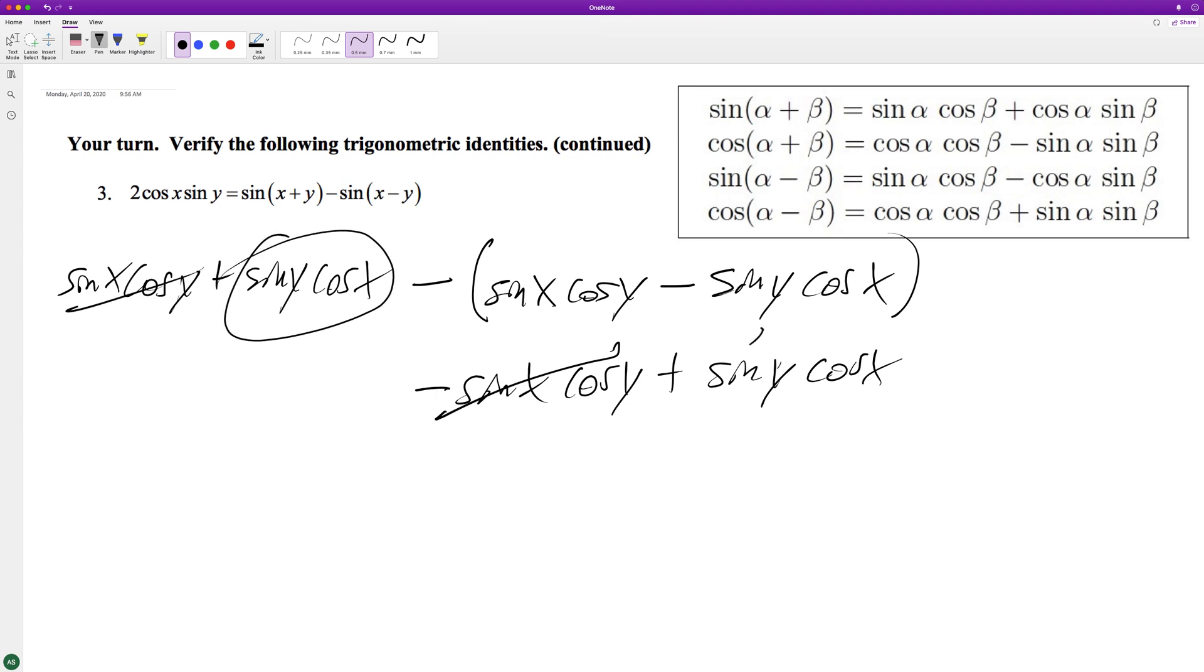two of these, so we end up with two sine of y. But because this is cosine of x, we'll start with that first. Cosine of x sine of y, that matches up, so that proves that these two were...